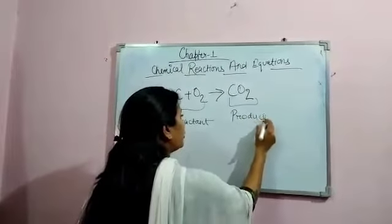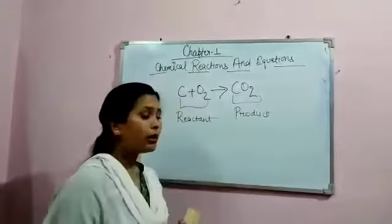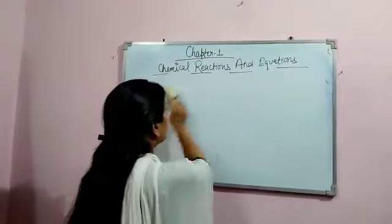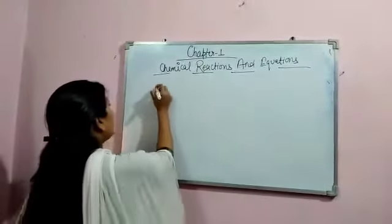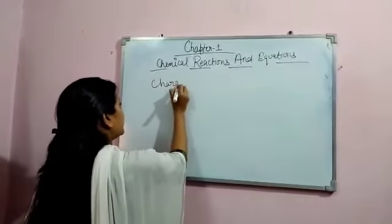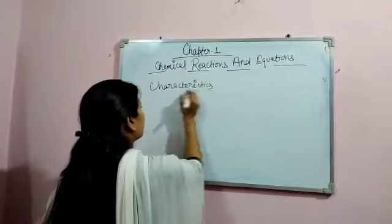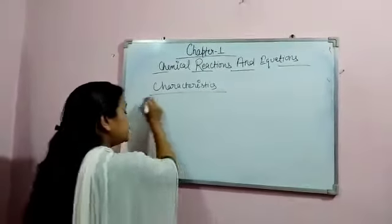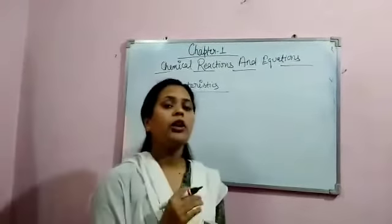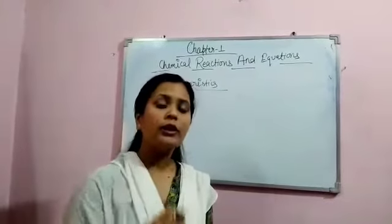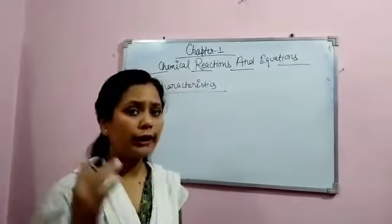We will learn how to write a chemical equation but before that let us understand the characteristics of a chemical reaction. When we add dilute hydrochloric acid to zinc, zinc chloride is formed and a gas is liberated.